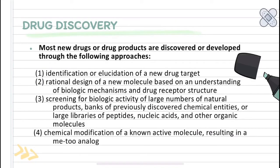Most new drug products are discovered or developed through the following approaches. First is the identification or elucidation of a new drug target. Second is the rational design of a new molecule based on an understanding of biologic mechanisms and drug receptor structure.